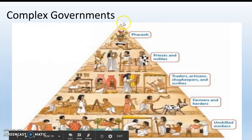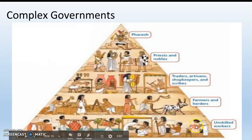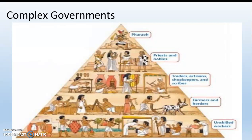We've got complex governments. At the top is the king; under the king are priests and nobles; under them are traders and artisans — think a blacksmith or someone who makes clothes — shopkeepers, and scribes who write things down. Under them are farmers and herders, then unskilled workers, and below them are slaves. This is a society that has slaves — buying, selling, and capturing slaves in war. Slavery was around for a really long time, and not all slaves were of any one particular background. We'll talk about that more as we move on.